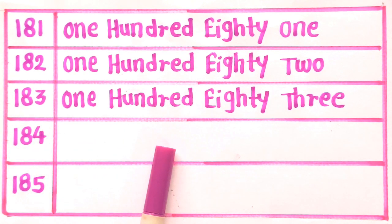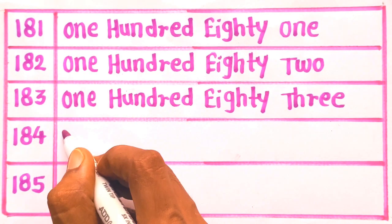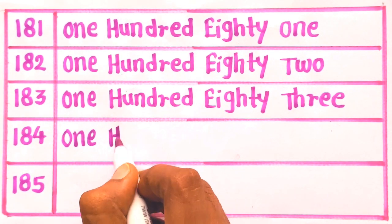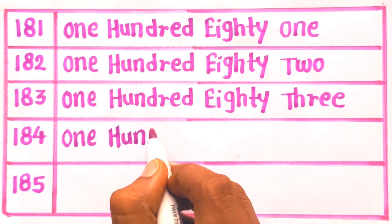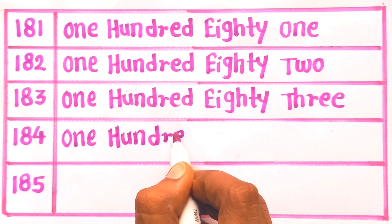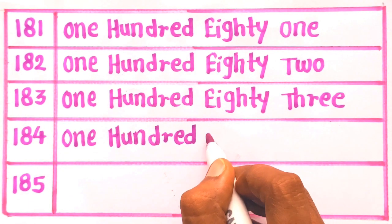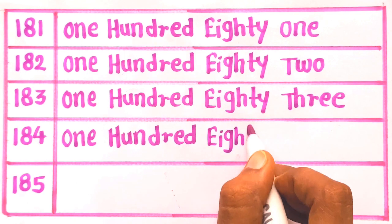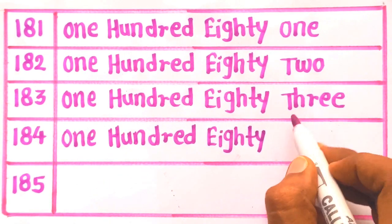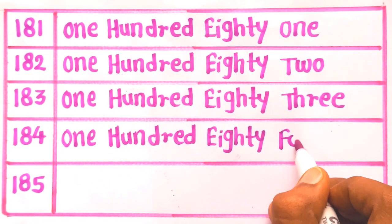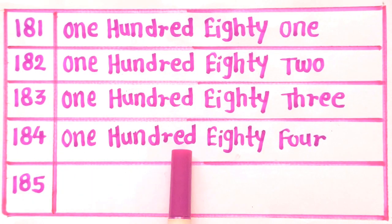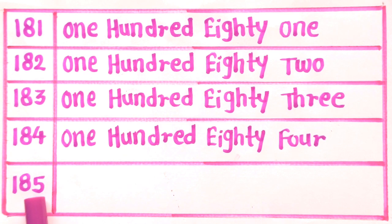Next is 184: O, N, E — 1. H, U, N, D, R, E, D — 100. E, I, G, H, T, Y — 80. F, O, U, R — 4. One hundred eighty four. 184.